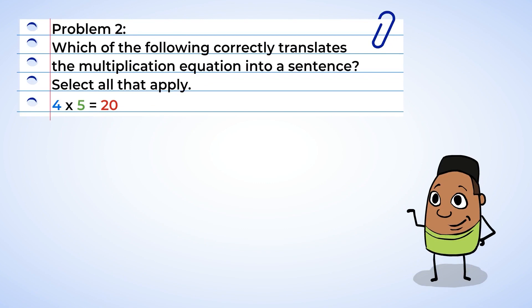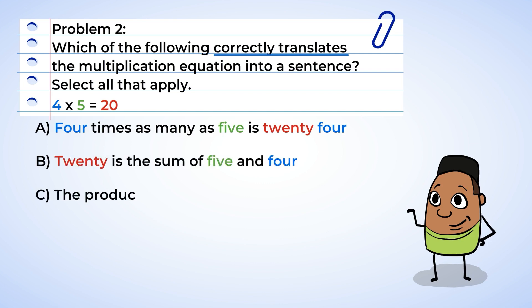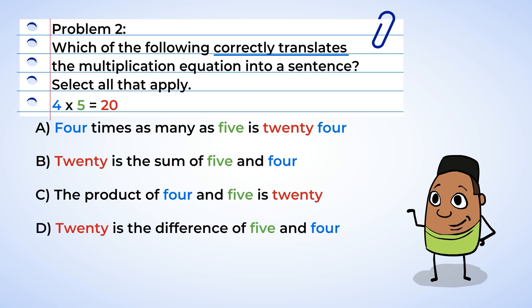A multiple choice problem — these are fun! Which of the following correctly translates the multiplication equation into a sentence? A: four times as many as five is 24. B: 20 is the sum of five and four. C: the product of four and five is 20. D: 20 is the difference of five and four. E: five times as many as four is 20.